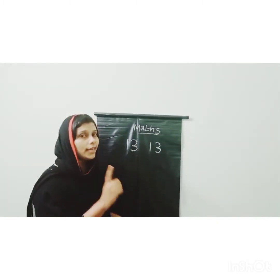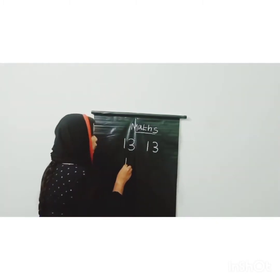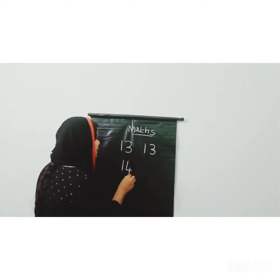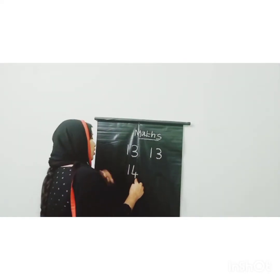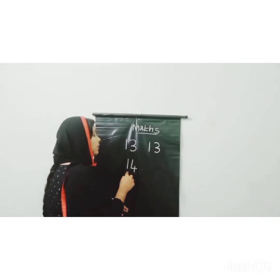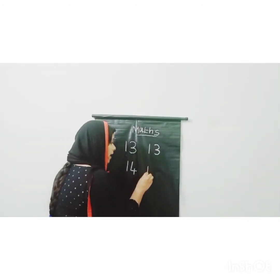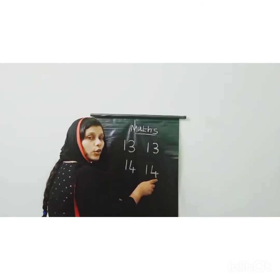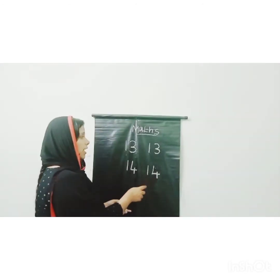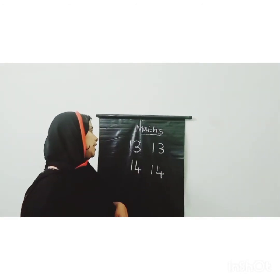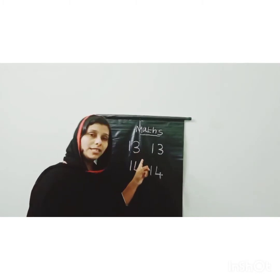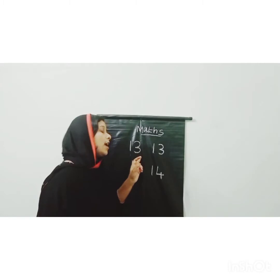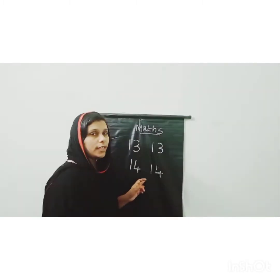The other number is number 14. Which digits do we write? Yes — 1 and 4. This is 14. 1, 4 — this is 14. Very good: 1, 3 is 13, and 1, 4 is 14.